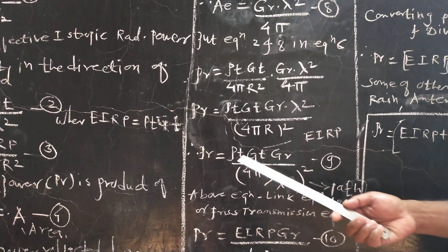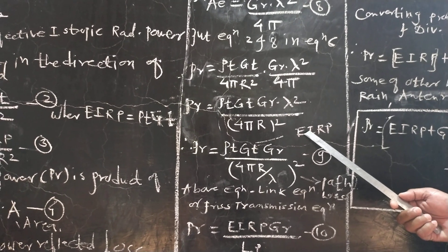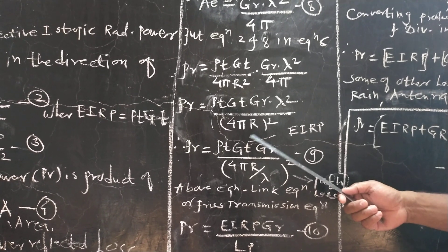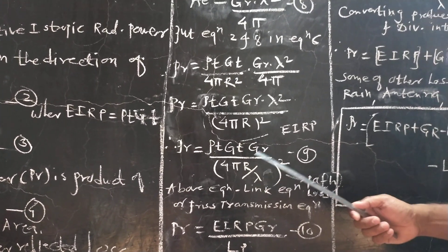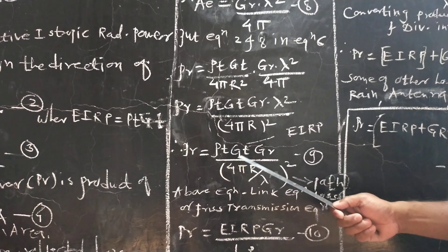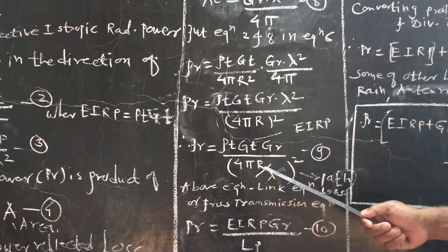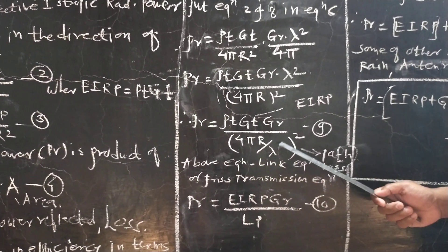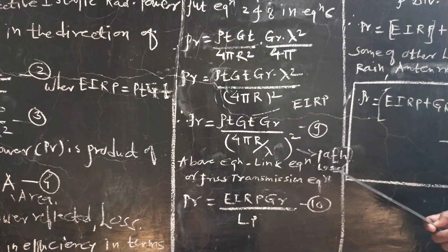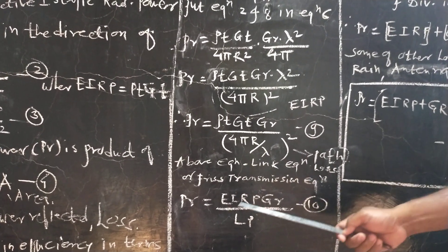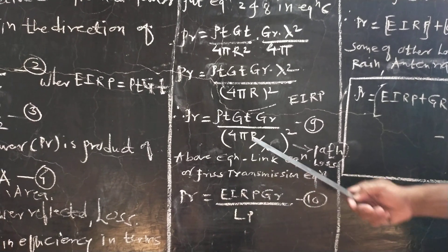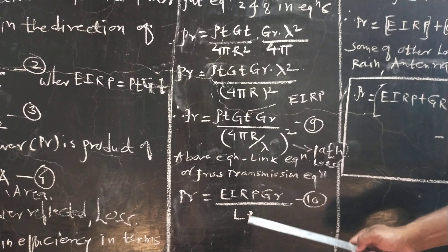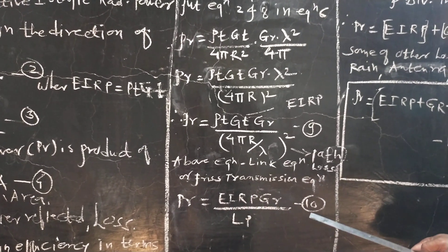As previously mentioned, PT·GT is the Effective Isotropic Radiated Power. Rearranging, the equation becomes: PR = PT·GT·GR / (4πR/λ)². This new term (4πR/λ)² is called path loss. Reframing the equation in terms of path loss, we get equation number 10: PR = EIRP × GR / LP.